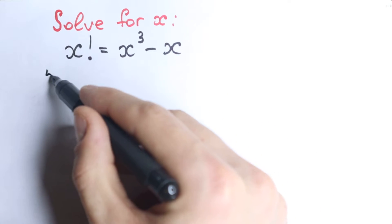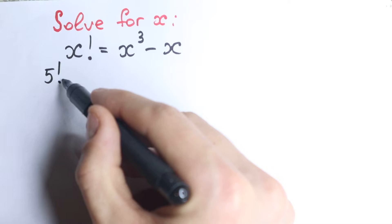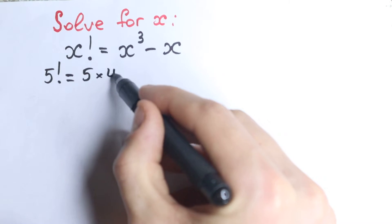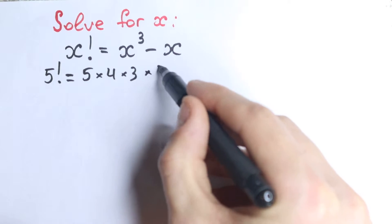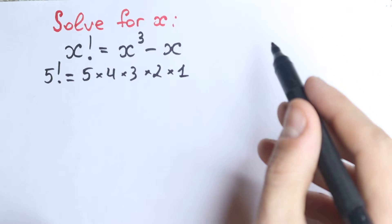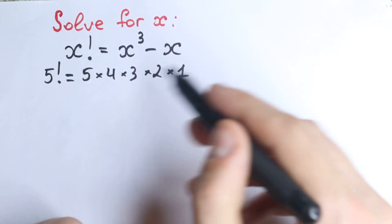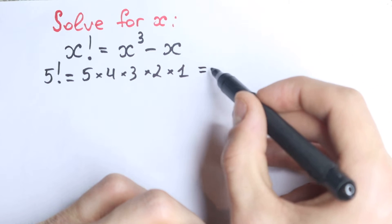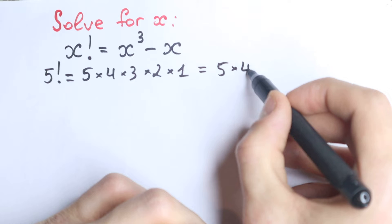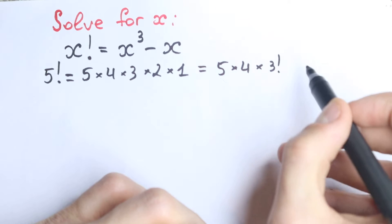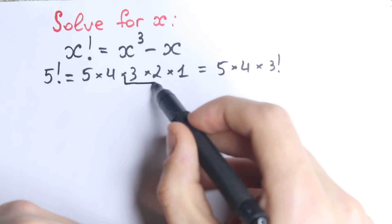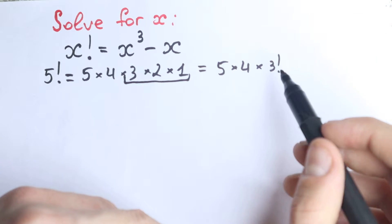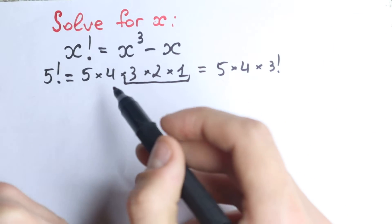First of all, I want to write this example. If we have 5 factorial, this is a classic algebra case, but in the same way we can write 5 factorial as 5 times 4 times 3 factorial — because 3 times 2 times 1 equals 3 factorial. We can write it in this way. So let's try to use this rule with our x factorial.